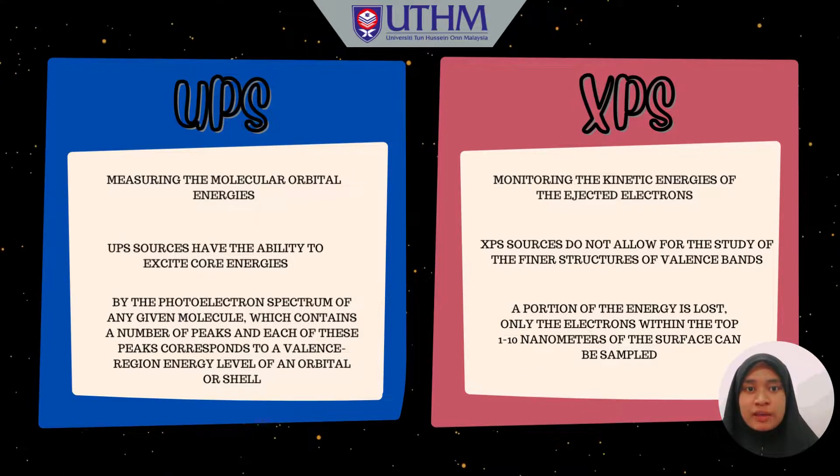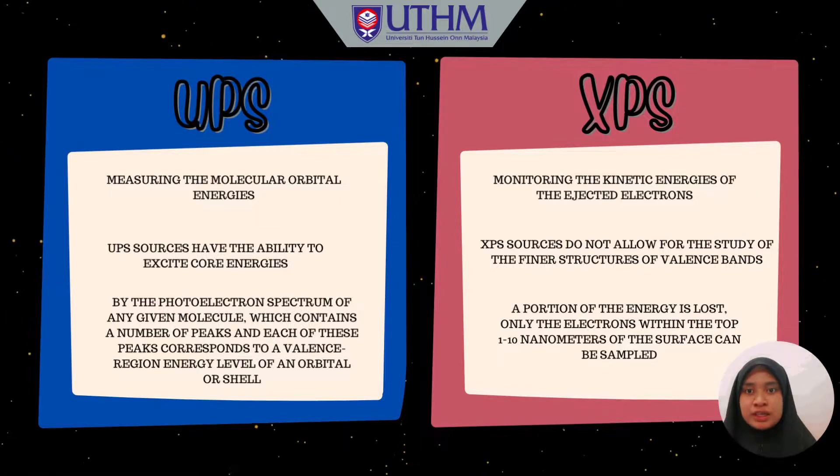UPS sources have the ability to excite core energies while XPS sources do not allow for the study of the final structures of valence bands.